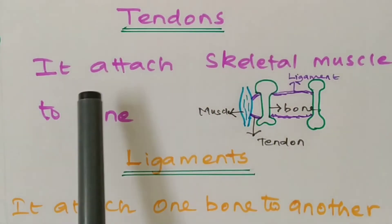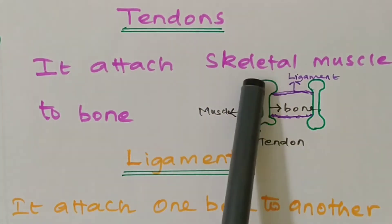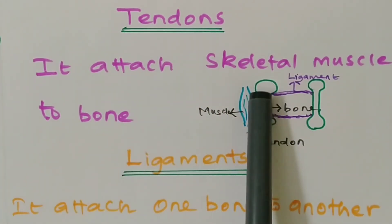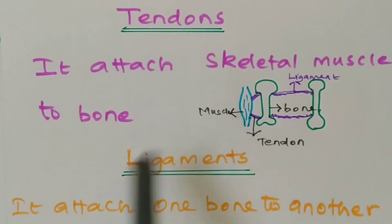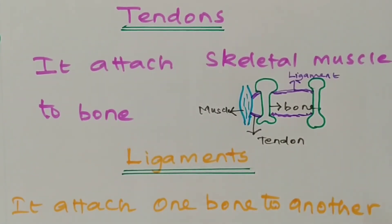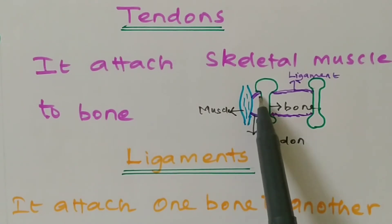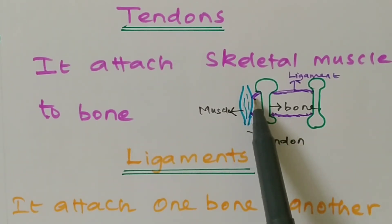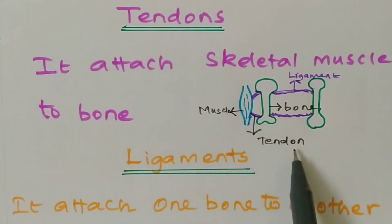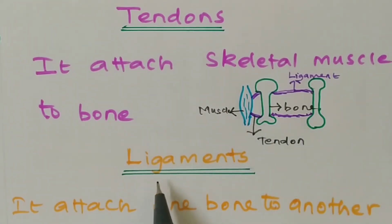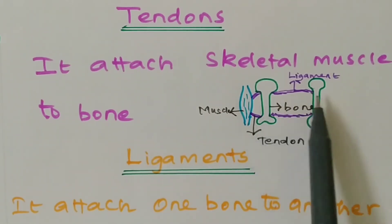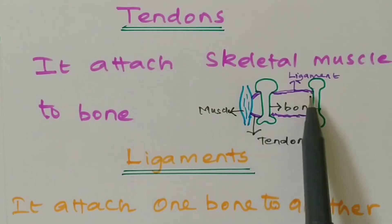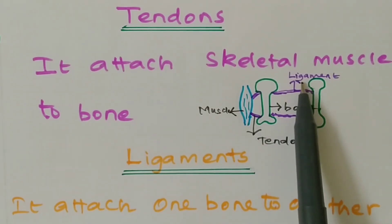In the case of tendon, it attaches skeletal muscle to bone. Consider this a bone and this the skeletal muscle — the connective tissue which connects the muscle to bone is termed as tendon. For ligament, it attaches one bone to another bone — the two bones are connected by this connective tissue termed as ligament.